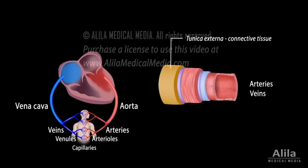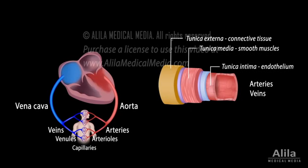The walls of arteries and veins consist of three layers: outer connective tissue, middle smooth muscle, and inner endothelium. Smooth muscle allows blood vessels to constrict or dilate, regulating blood flow. The walls of capillaries consist solely of a thin endothelium to permit easy exchange of substances.